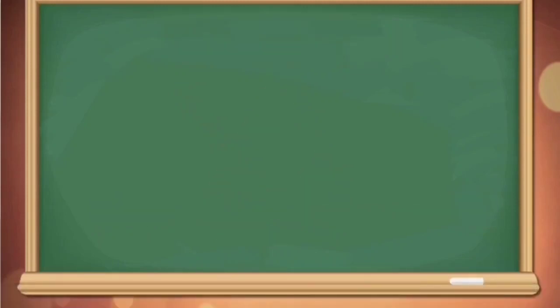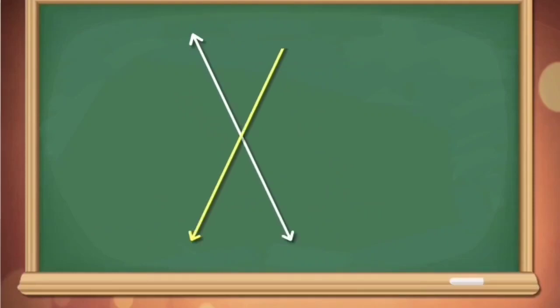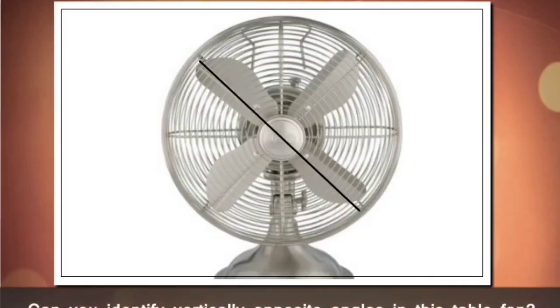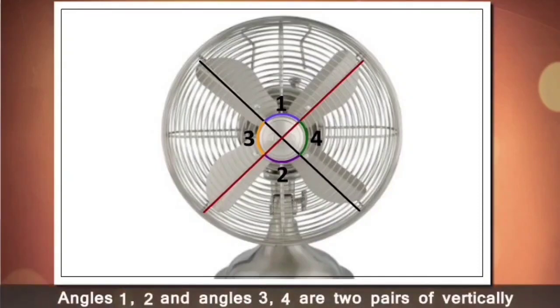Next are vertically opposite angles — the angles that are opposite to each other when two lines intersect. The interesting thing is that vertically opposite angles are always equal. You can identify vertically opposite angles in a table fan: angle 1 and angle 3, and angle 2 and angle 4, are two pairs of vertically opposite angles.